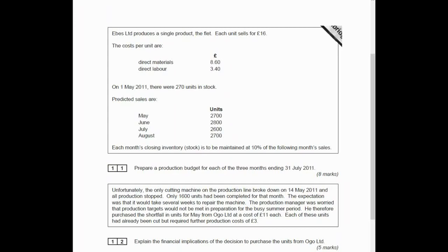This is a question that came from the ACCN4 paper in June 2011 under the old specification, but this is quite a likely topic. This is production budget in either Section A or Section B of any future Paper 2 exams for 7127-2. It covers production budgets, but also a bit of should we buy in the shortfall in production, so a little bit of decision making as well using marginal costing and contribution.